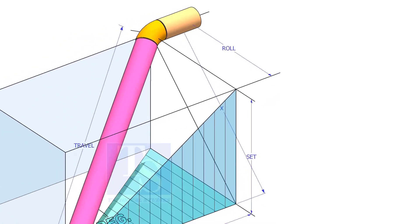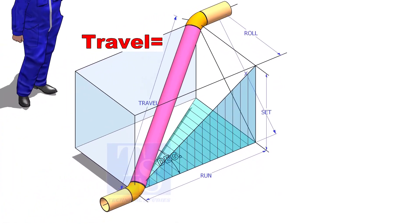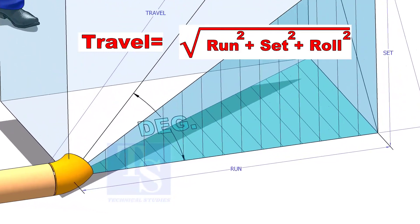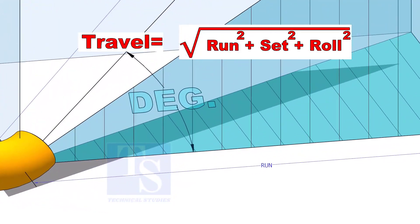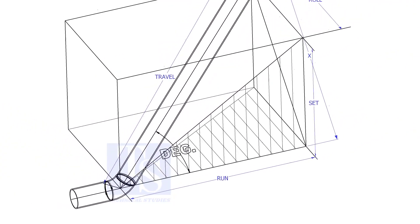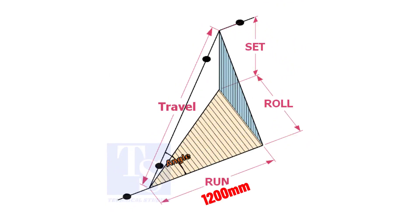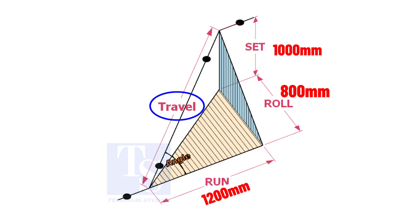The formula to calculate the travel length is the root of the sum of the run, set and roll. Assume that the run is 1200 mm, set is 1000 mm and the roll is 800 mm. Calculate the travel length.